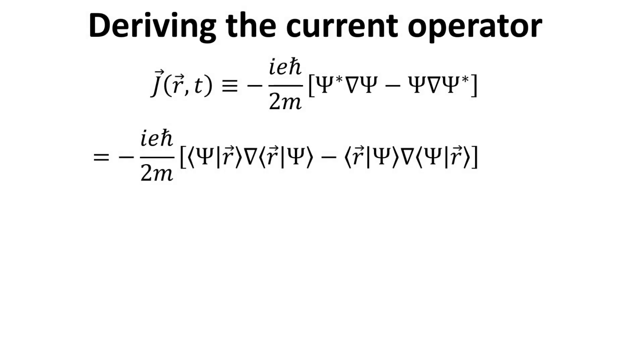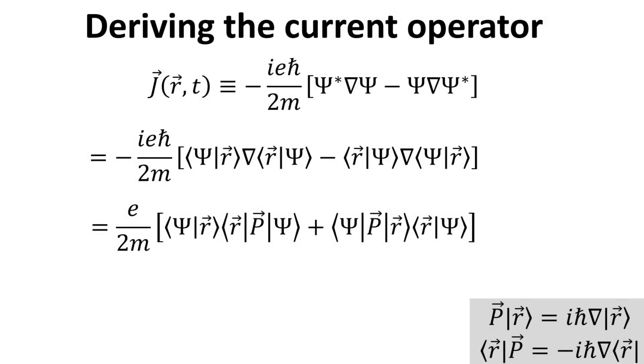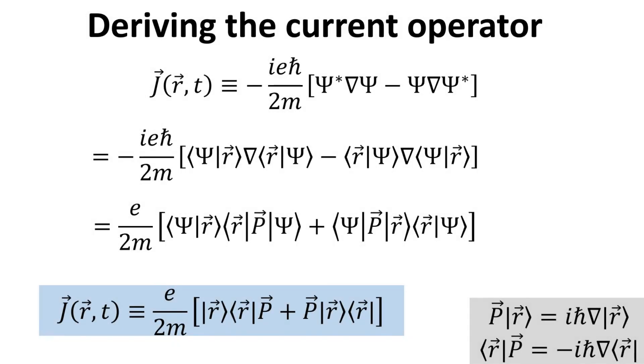We begin by writing the various terms in its Dirac notations. Next, we recall the definition of the momentum operator in the position representation, as shown in the grey box. The expression for the current density operator can then be given as follows in the blue box.